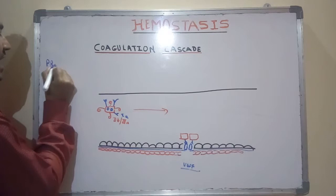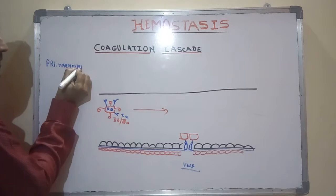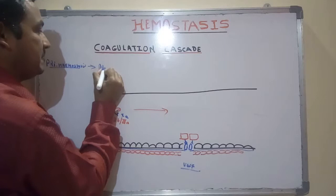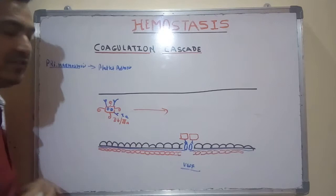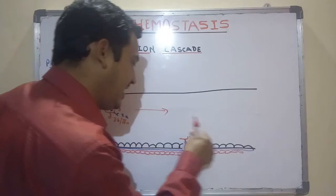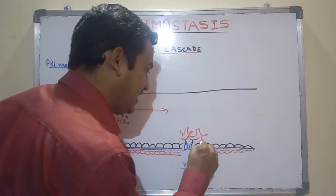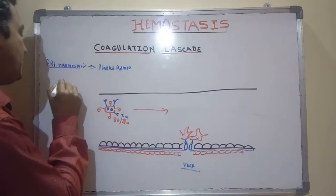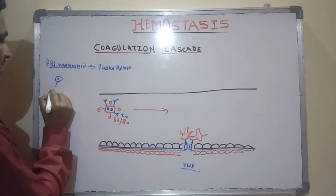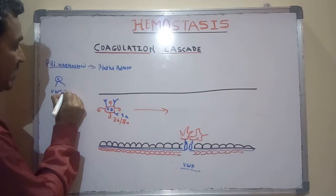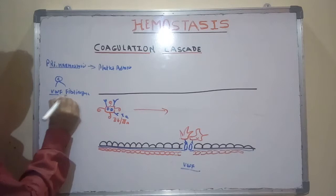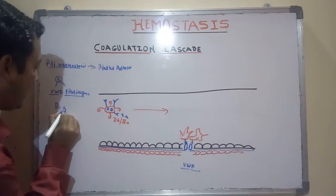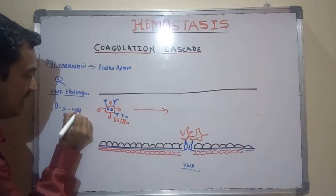Many platelets come and attach via the 1a receptor. Once platelet is attached to VWF on the collagen via the 1a receptor, they start changing shape — this process is called platelet adhesion, the first step in primary hemostasis. Then they change shape, distorting, and the granules inside degranulate due to pressure from the shape change. Alpha granules (oval) release von Willebrand factor and fibrinogen.